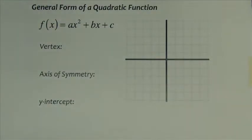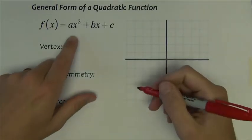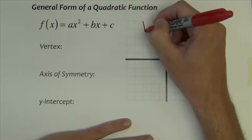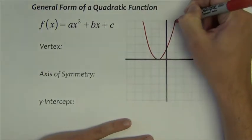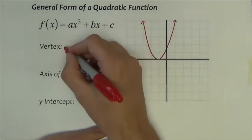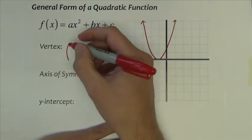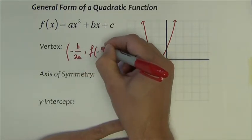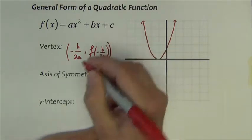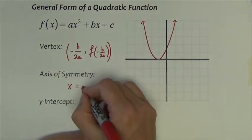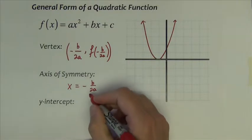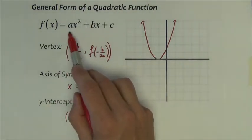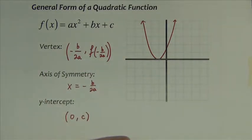Standard form or general form of a quadratic function looks like this: f of x equals ax squared plus bx plus c. The vertex is of the form negative b divided by 2a, comma f of negative b divided by 2a. The axis of symmetry is always x equals negative b divided by 2a. And the y-intercept is the point 0 comma c. All this information can be found from the coefficients in the function, which is quite convenient.